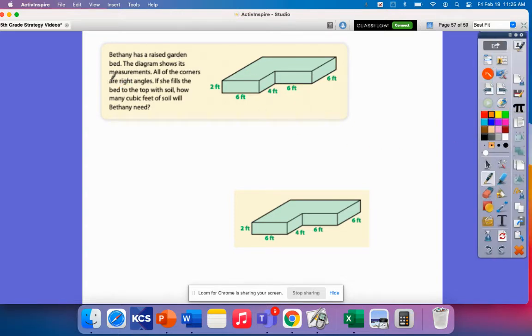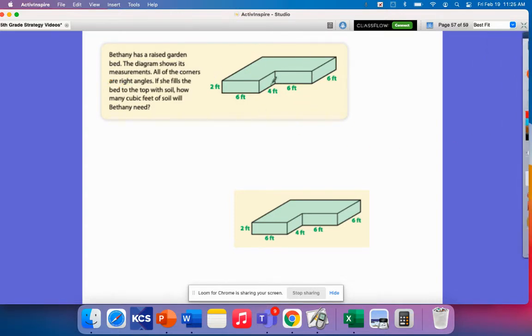This part's really important that it says all of these are right angles because that's going to prove that these opposite sides would be the same. If you remember back in third and fourth grade, we talked about if two lines are parallel and they come to a right angle, then they will be equal.